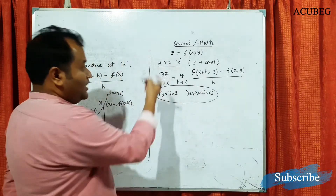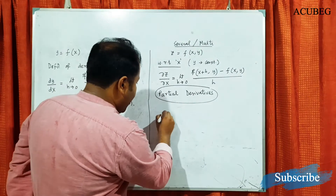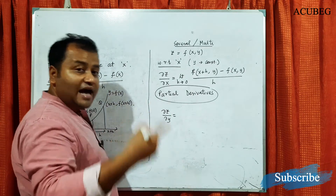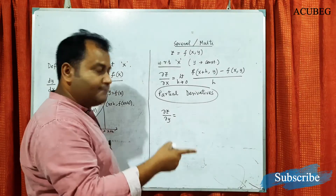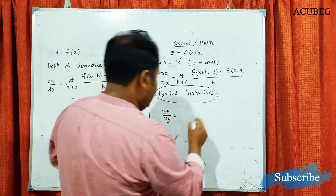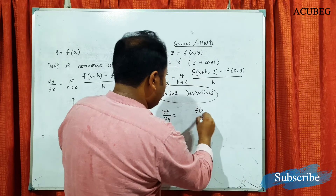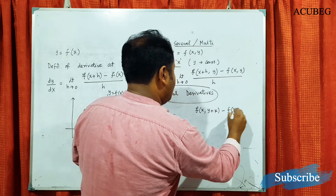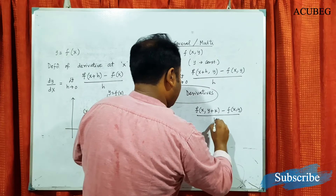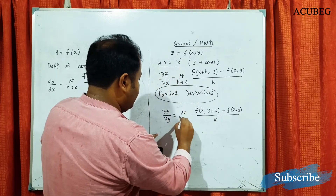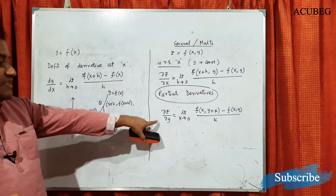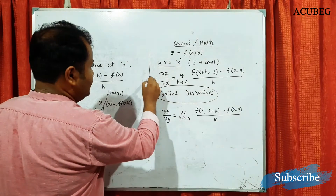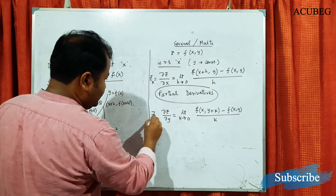Similarly, if you want to find del z / del y, then x is constant, so changes will be for y only. It will be: limit k tends to 0 of [f(x, y+k) minus f(x, y)] divided by k. This is called the partial derivative of z with respect to y. Sometimes del z/del x is written as z subscript x, and del z/del y is written as z subscript y.